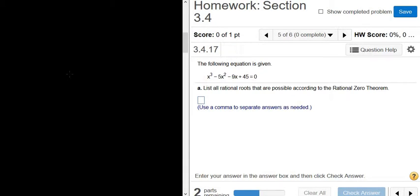The following equation is given. List all rational roots that are possible according to the Rational Zero Theorem. Okay, so we have to start by looking at the factors of 45, which is the last one.